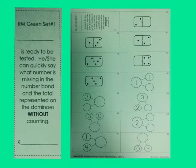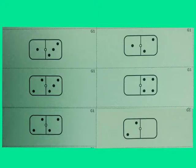you must be able to say what number is represented by the dominoes and what the missing number is in these number bonds. What is the number in these dominoes?